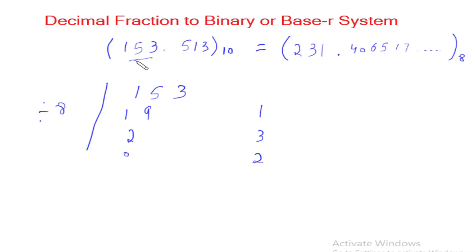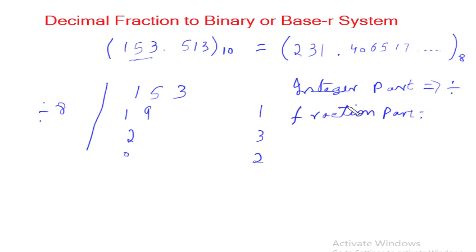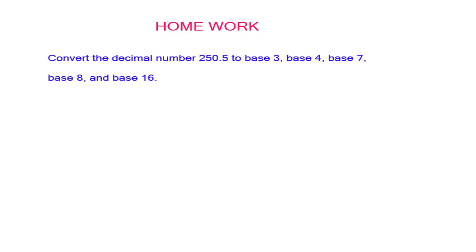The bottom line is: when we have a decimal number, the integer part is converted by division and the fractional part is converted by multiplication. If we need to convert to a ternary system, we divide the integer part by 3 and multiply the fraction part by 3 — the process is the same. The conversion of a decimal number with both integer and fraction parts is done by converting each part separately and then combining the two answers. Don't forget to submit your homework answer in the comment section. See you in the next lecture, inshallah. Thank you.